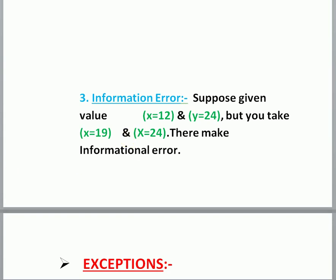What is an information error? If you give any wrong information, an information error is created. For example, suppose a question asks you to multiply two variables x and y, where x is 12 and y is 25, but you mistakenly put the value 19 in place of x. This type of error is called an information error — when you give one or more pieces of wrong information.